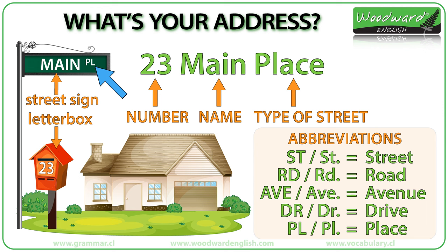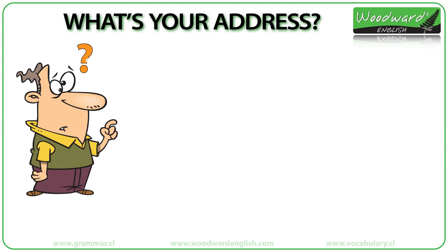So, the order is: number, plus name, plus type of street — for example, 24 Main Street. The question to obtain this information is: What is your address?